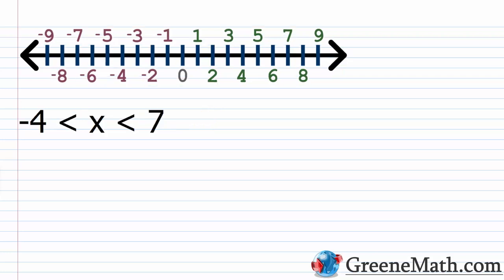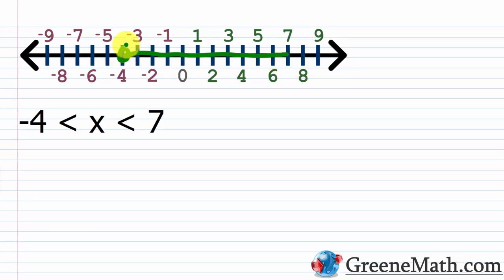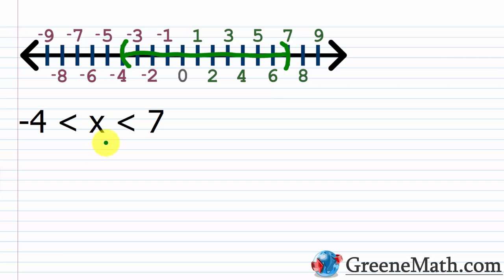For the last example, x is greater than negative 4 and less than 7. Graphically, place a parenthesis facing right at negative 4 and a parenthesis facing left at 7, then shade everything in between. Neither negative 4 nor 7 is included. You could also use open circles at each endpoint. In interval notation, we write (−4, 7), with parentheses on both sides.